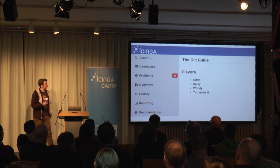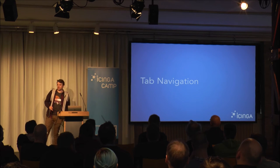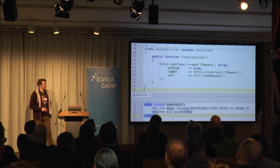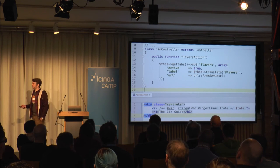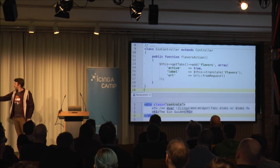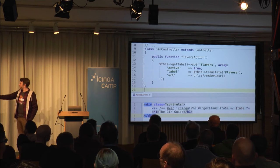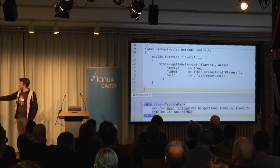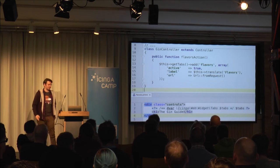What's missing if you know Icinga Web 2 is a navigation tab. So let's add tab navigation to our action. In our gin controller class with our flavors action, to add a tab we get the tabs object, add a 'flavors' tab which is active, give it a label — make it translatable — and the URL is just the module/controller/action URL. Nothing special here.